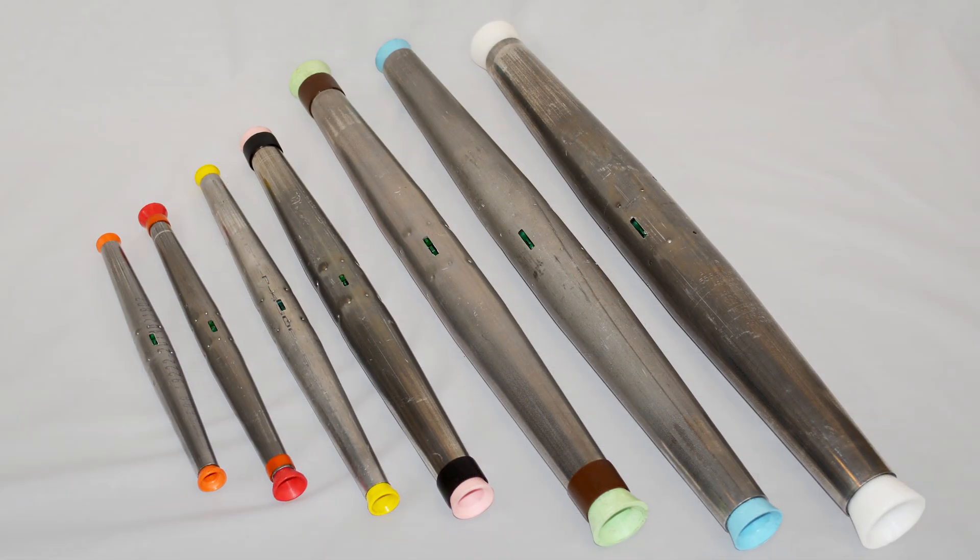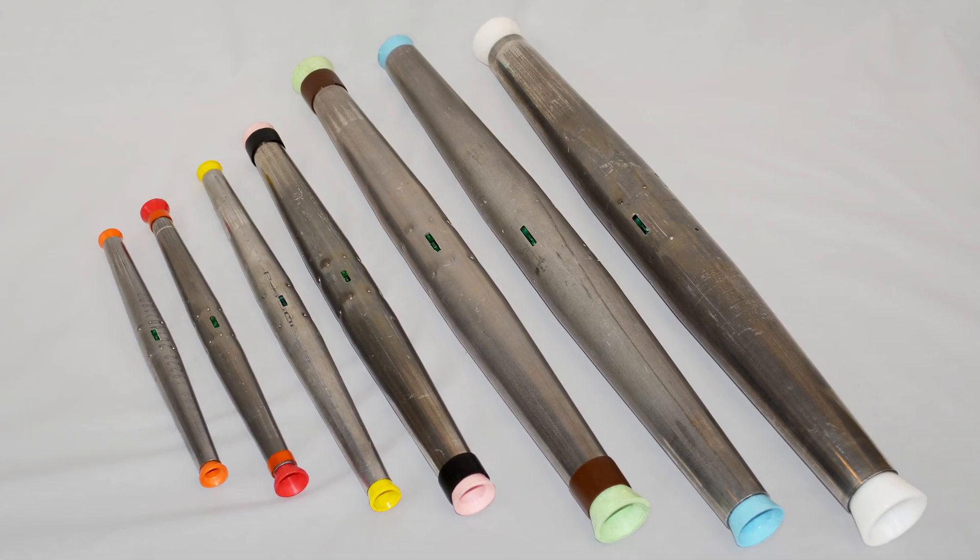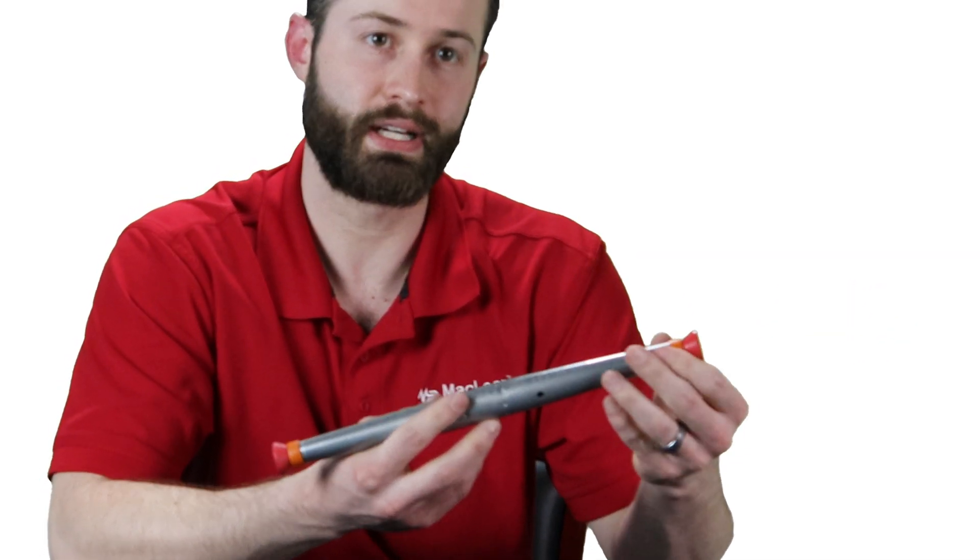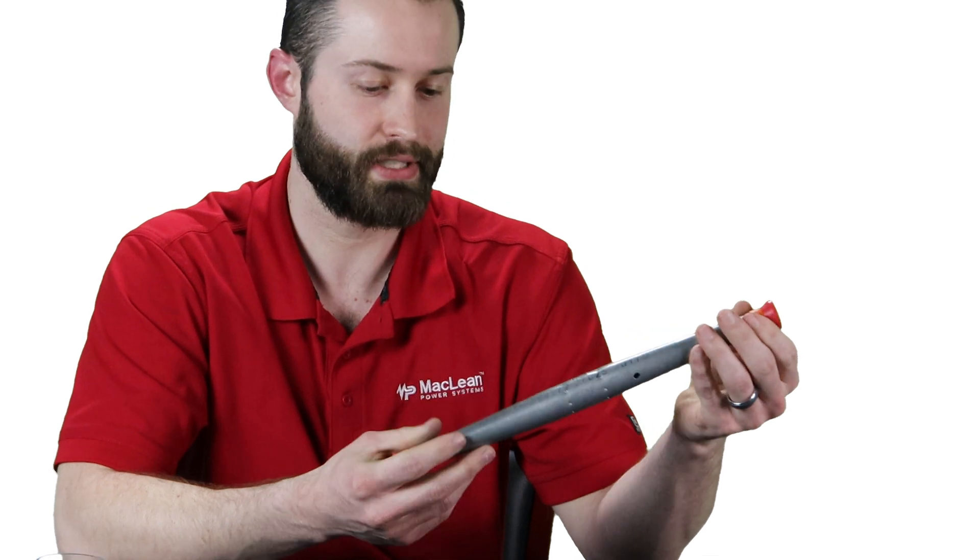Our strand guides are color coded per industry standard. You can just look here and see that you have a red strand guide in this case and an orange indicator sleeve, which means you can go from number two to number four on this particular size.